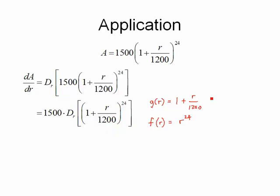So in order for me to take the derivative, I need to know g prime of r, the derivative of 1 plus r over 1,200. So the derivative of the 1 is 0. I'm going to think of this as 1 over 1,200 times r. The 1 over 1,200 comes through the derivative. I take the derivative of r, and what I end up with is 1, or 1 over 1,200 times 1, or just 1 over 1,200. The derivative of r to the 24th is going to be 24r to the 23.